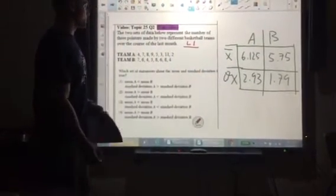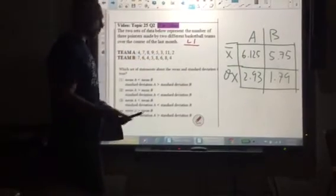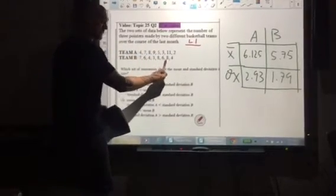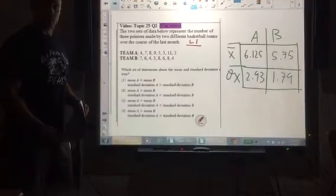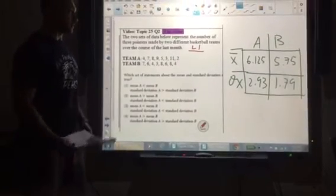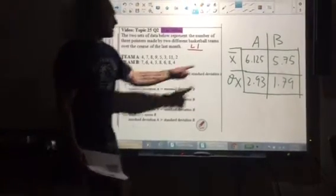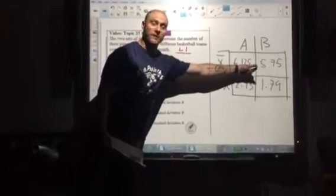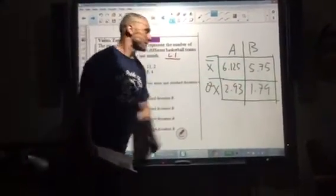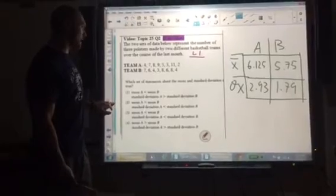Now, I'm going to go back to L1, clear L1, and then I'm going to enter all of Team B into L1, stat count. Now we find the mean for Team B is 5.75, and the standard deviation for Team B is 1.79.